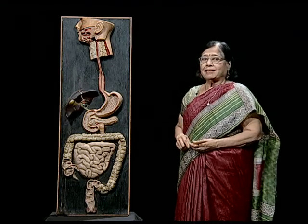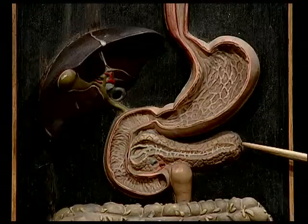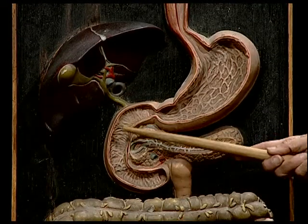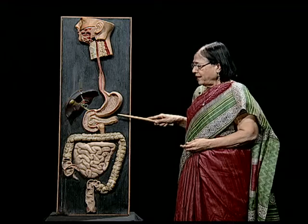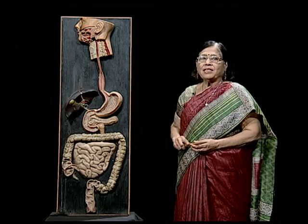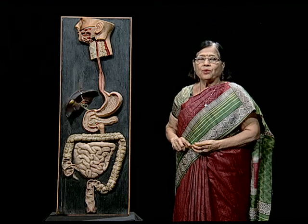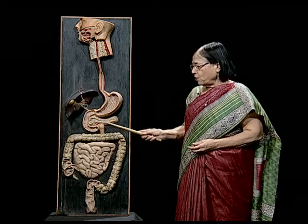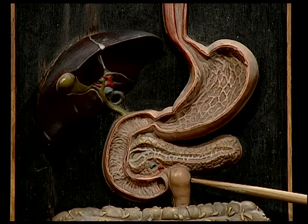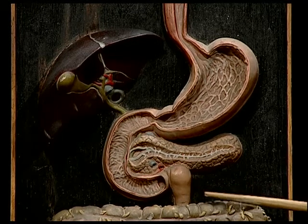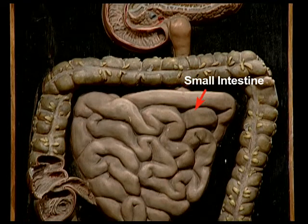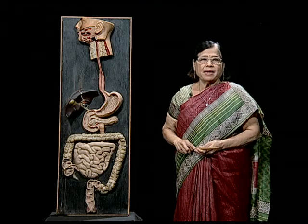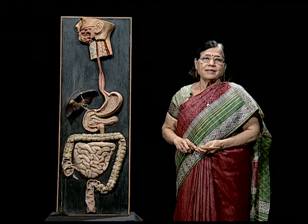You should see in this model that the pancreas is placed in the loop of the duodenum. It is a membranous structure lodged in the U-shape of the two limbs of the duodenum in the body. Duodenum then continues as the small intestine, which is very long and hence coiled. The remaining digestion takes place in the small intestine by juice secreted by the small intestine called succus entericus.